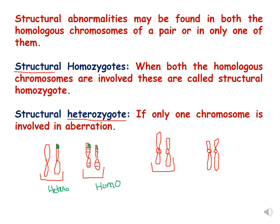For example, here you can see two homologous chromosomes, and these two are non-homologous to each other. In one homologous pair, if some aberration occurs — say this part gets duplicated — this will be called a structural heterozygote of duplication.